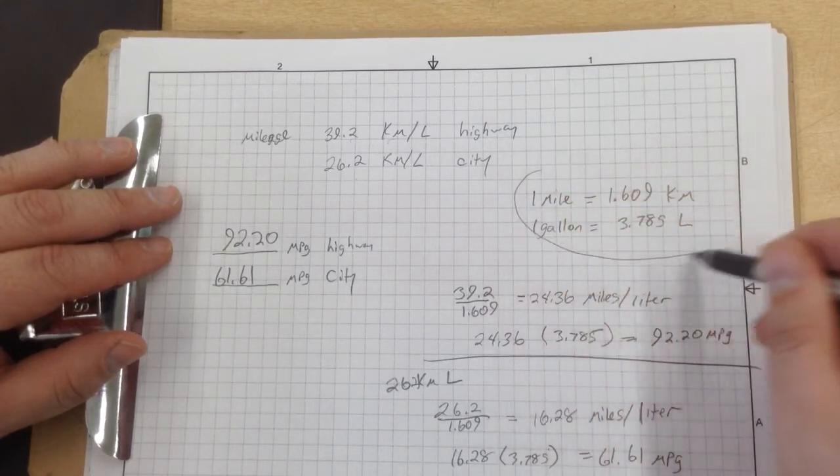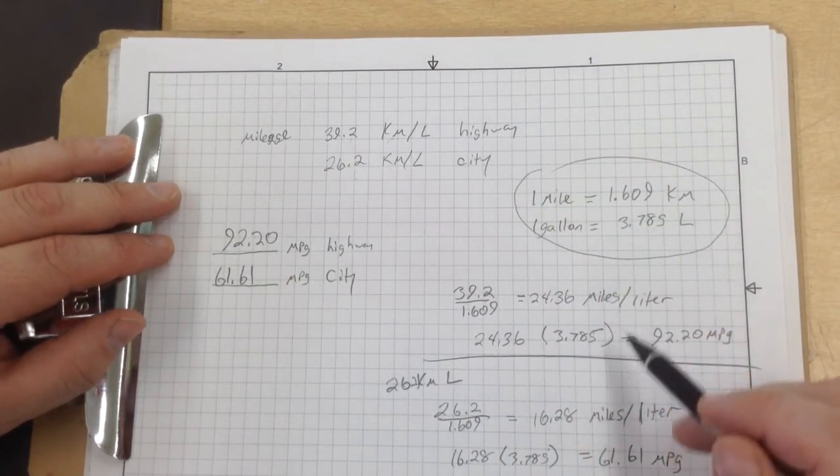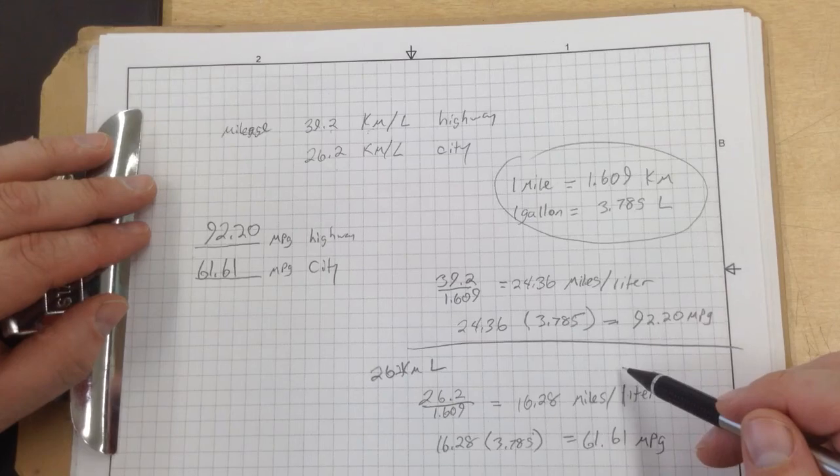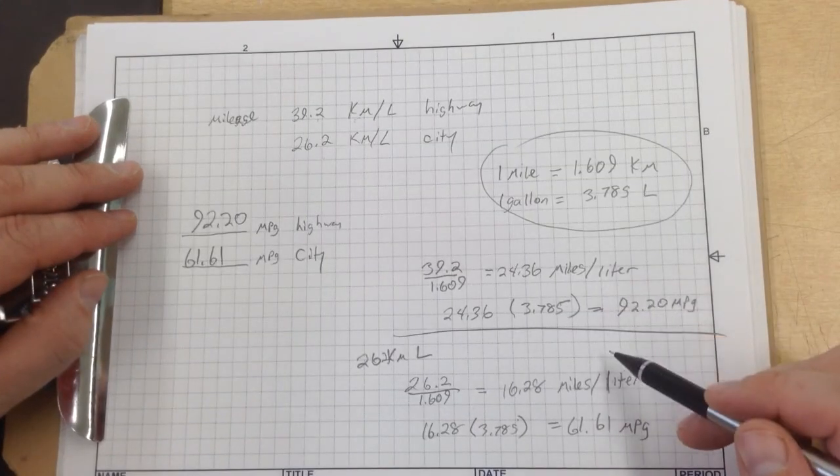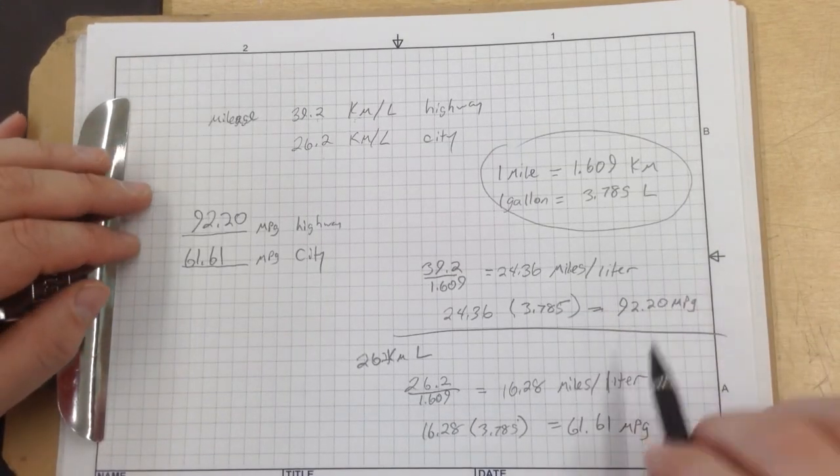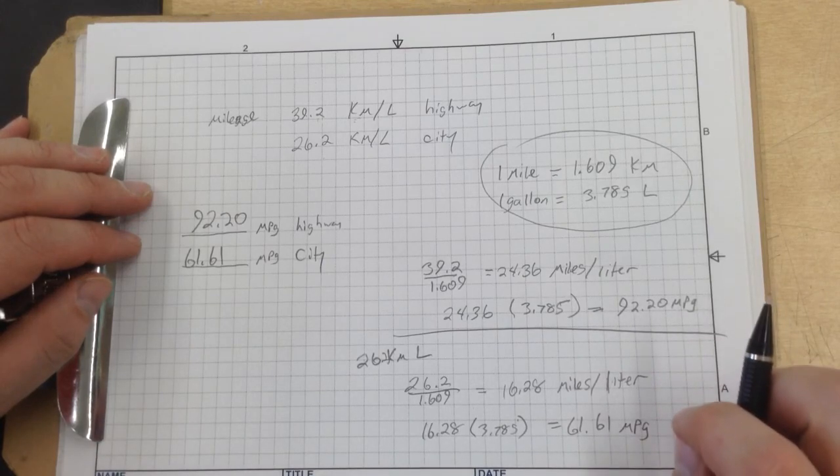These numbers right here are the givens. The process is really what you're looking at, and it's complicated to do the math. Stop this video, rewind it, replay it as many times as you need to get the concept.